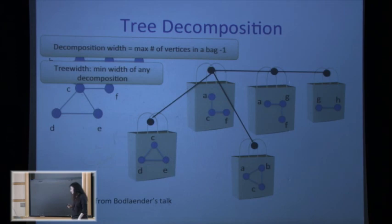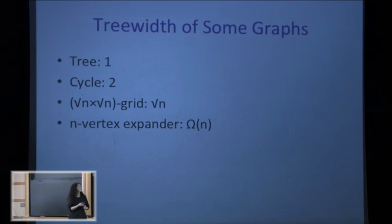Here are some typical numbers to give a sense of scale. The tree-width of a tree is one. The tree-width of a cycle is two. If you take a √n × √n grid, the tree-width is √n. If you take an n-vertex expander with constant degree, the tree-width is roughly n.